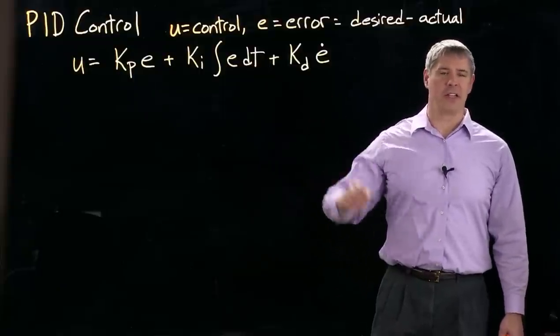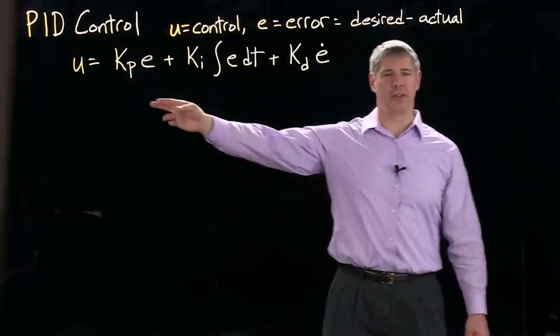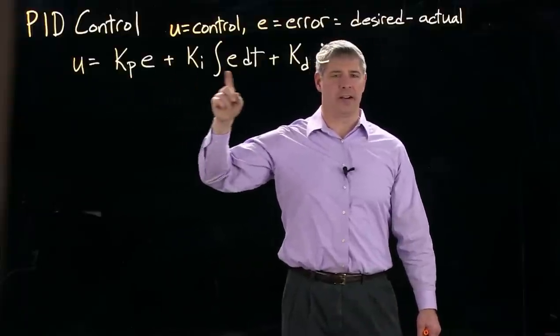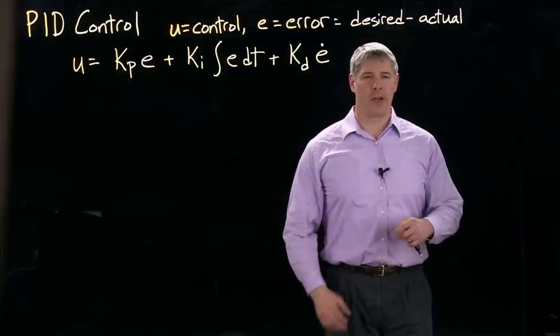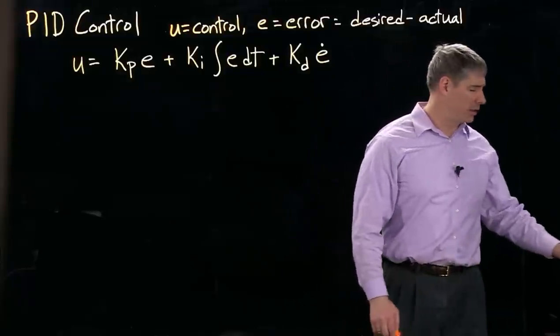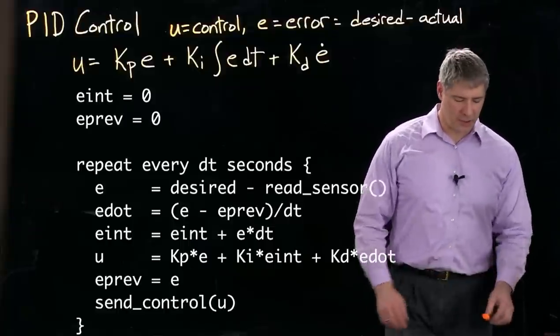This is called a linear control law because the control value u is linear in the error, the integral of the error, and the derivative of the error. If we want to implement that in a computer, we can look at pseudocode.